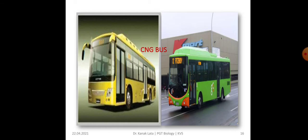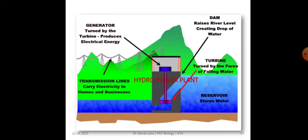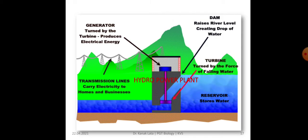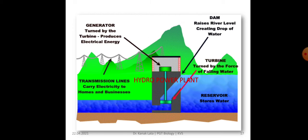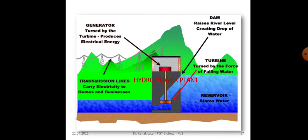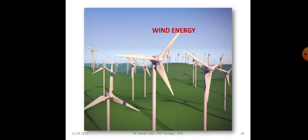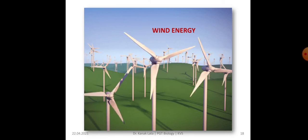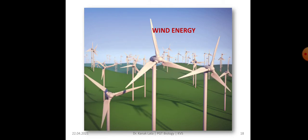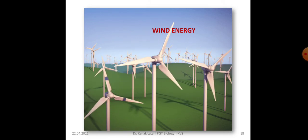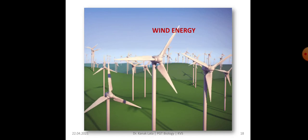Here you can see the CNG buses. Now here is a hydro power plant. With the help of water, we can generate energy and that energy is further used for various activities in home and in industries. This is wind energy. With the help of a windmill, we can generate energy and it can be used for various activities.